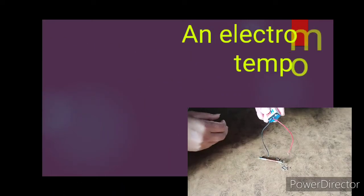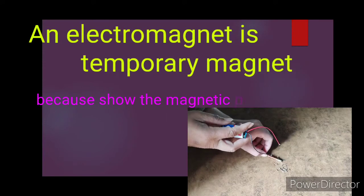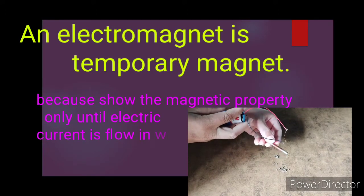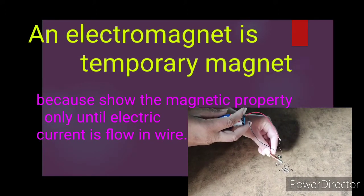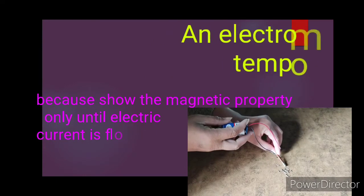An electromagnet is a temporary magnet because it shows magnetic properties only when electric current is flowing through the wire.